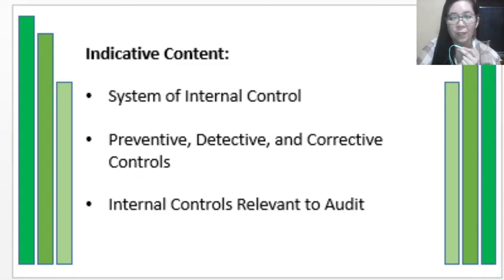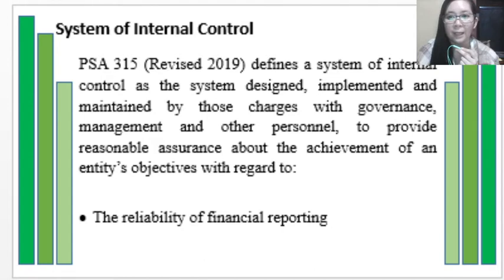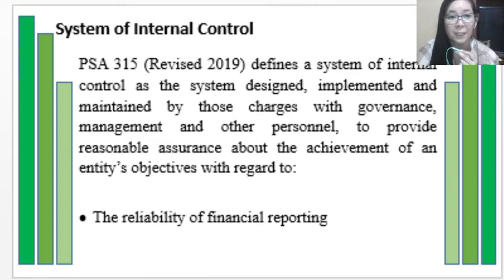For this video lecture, we will be discussing some parts of the first major topic about the system of internal control. According to PSA 315, which was revised in 2019, a system of internal control is defined as the system that is designed, implemented, and maintained by those charged with governance, management, and other personnel to provide reasonable assurance about the achievement of the entity's objectives.